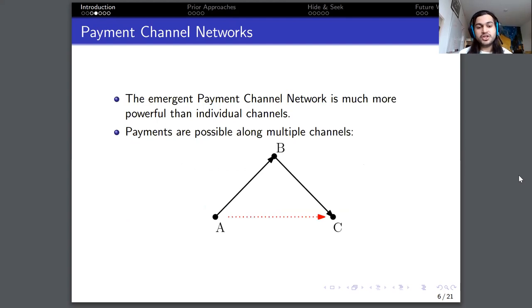So the emergent network, the payment channel network, is actually much more powerful than the individual channels. So you don't actually need every user to have a direct payment channel with every other user. For instance, A and C don't have a direct channel between them, but suppose A still wants to pay C. This payment is possible on the payment channel network via B. So A pays the same amount of tokens to B, and B pays C. And in this way the payment is possible. B may charge a small amount of routing fee for this purpose.